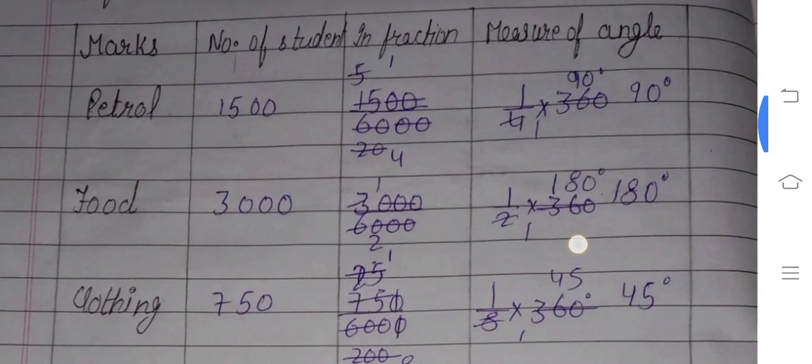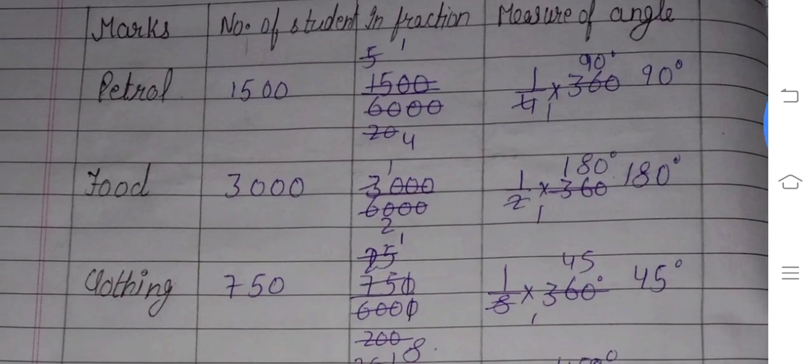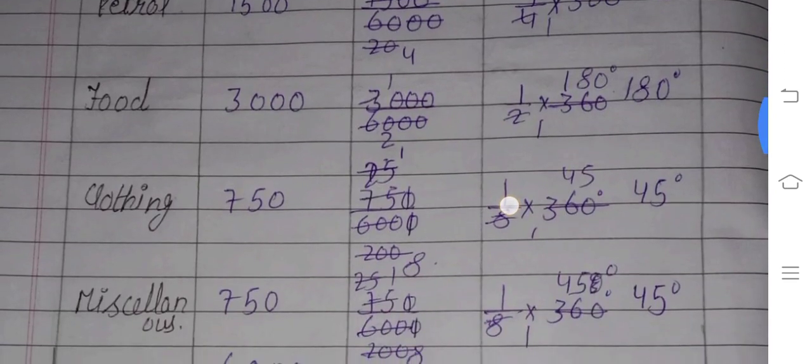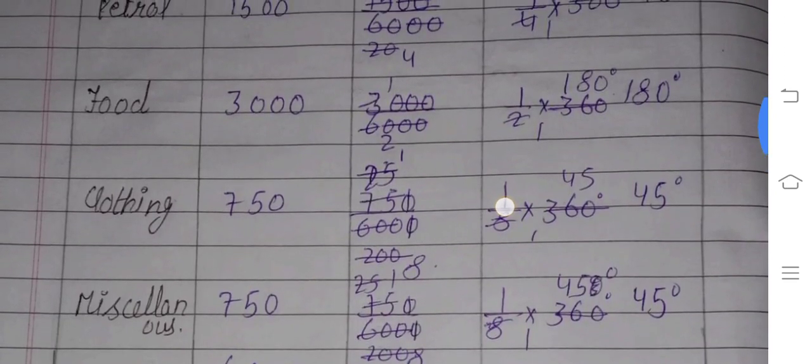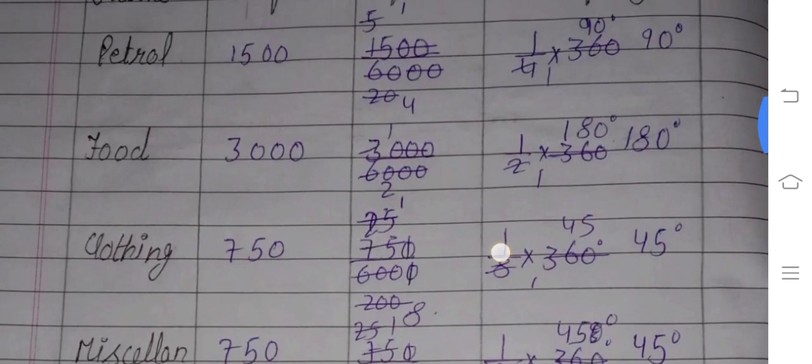So what do we do? In the fraction column, we have number of students in Petrol and we have total, which we have added, we have divided. So we have 1 by 4. Same as we will do it all, we will divide all the numbers.